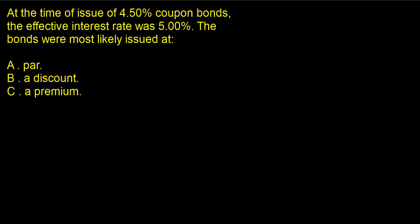If you know how bonds have been calculated and how they're done, this is one that you can solve fairly quickly and not waste any time. You know it's not par, because at par, these rates would have to be the same, and they're not the same. So if it was 5% and 5%, you know it's par — but it's not.